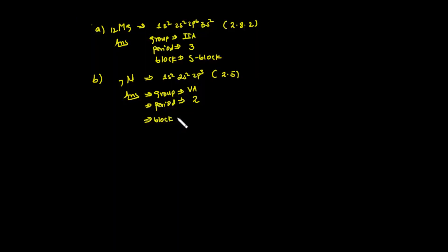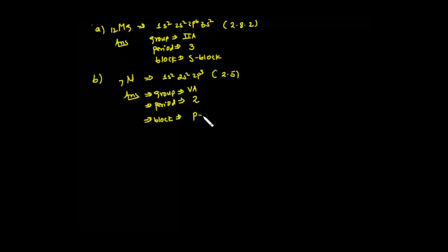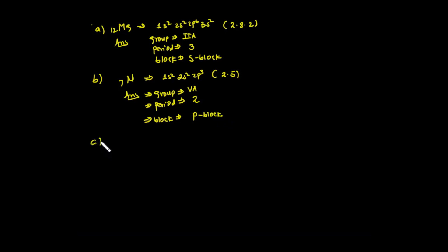The blocks are: s-block, p-block, d-block. What is this element? Potassium. Atomic number — we can see the electron configuration.